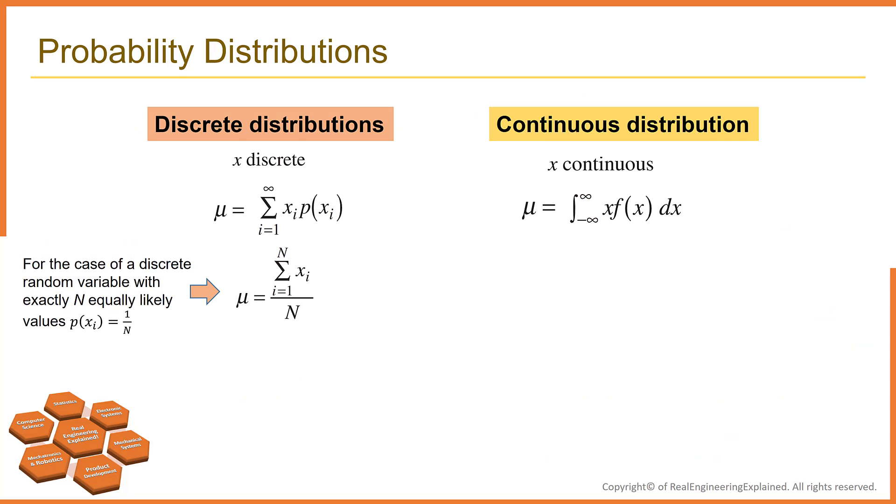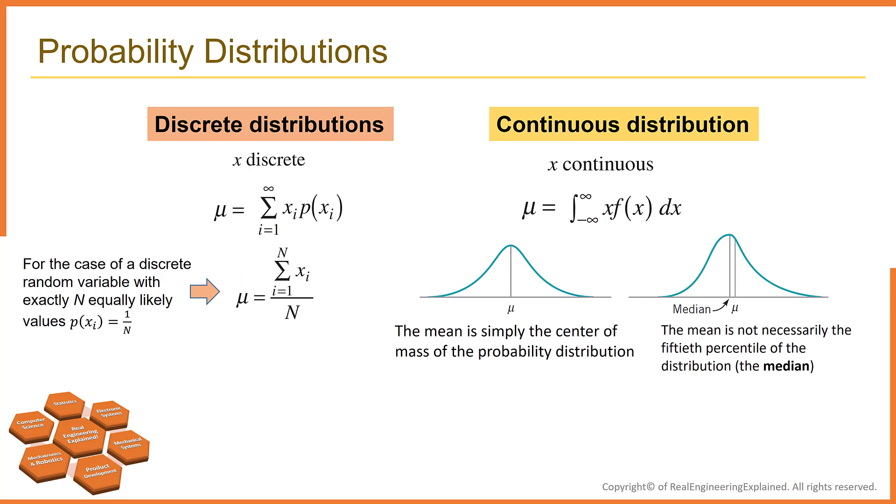The mean mu of a probability distribution is a measure of central tendency in the distribution, or its location. The mean is defined by this equation. For the case of a discrete random variable with exactly N equally likely values, the mean value can be computed with this equation. As you can see, the mean is simply the center of mass of probability distribution. That's the summation of all observations divided by the number of observations. Please note that the mean is not necessarily the 50th percentile of the distribution. The mean is not necessarily equal to the median.